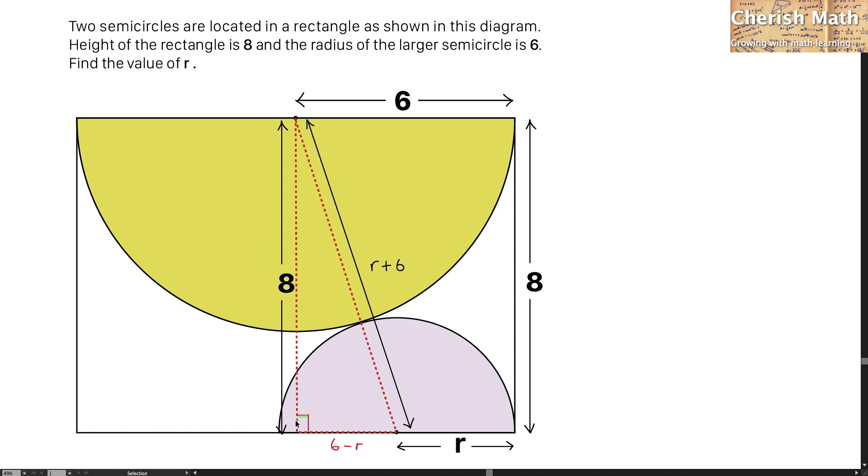I am going to use Pythagoras theorem on this red triangle to work out the value of r. And this is the first equation from the theorem.